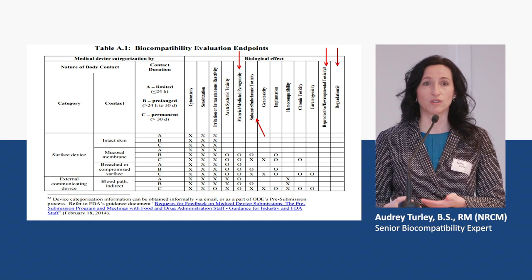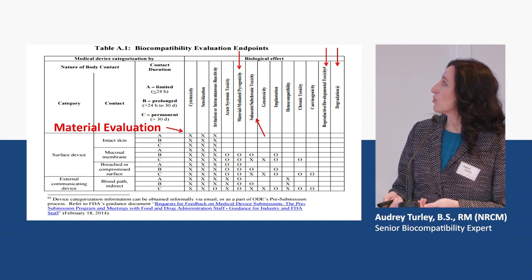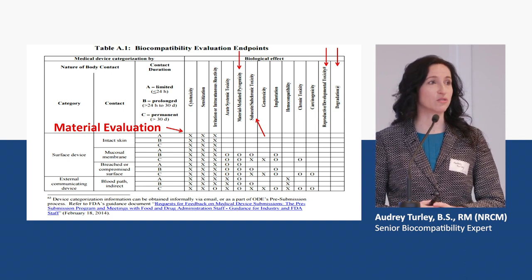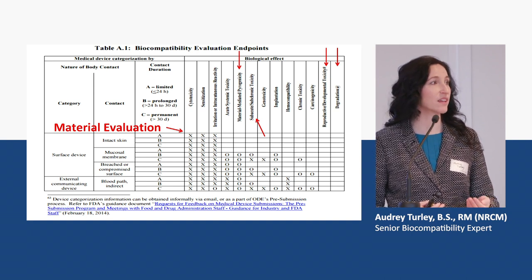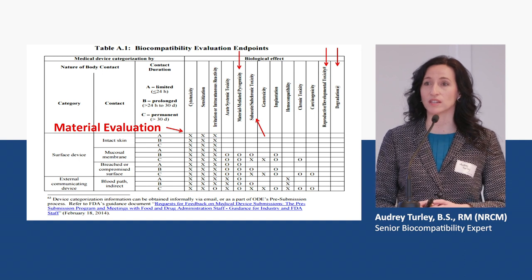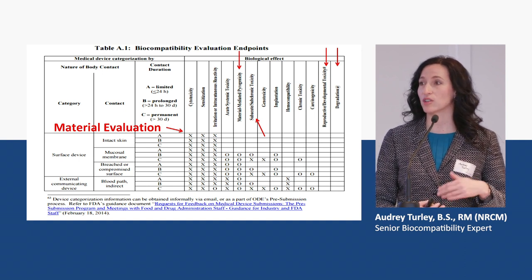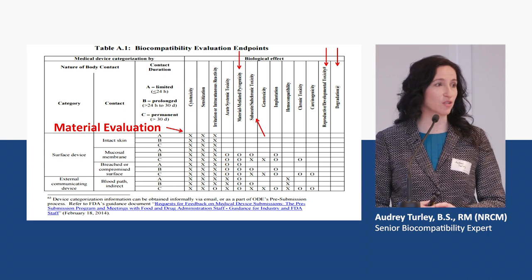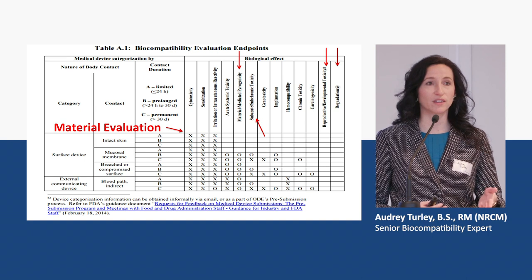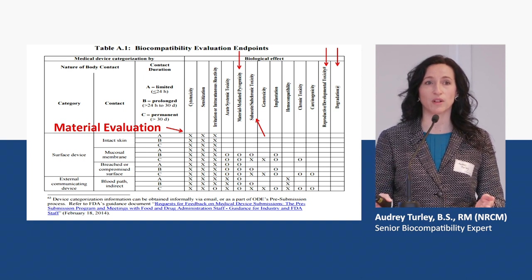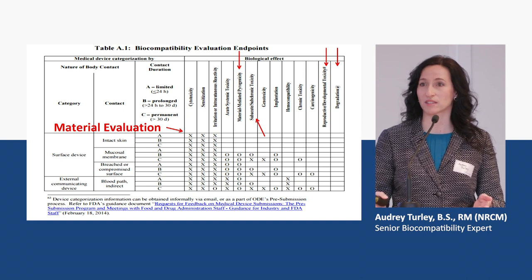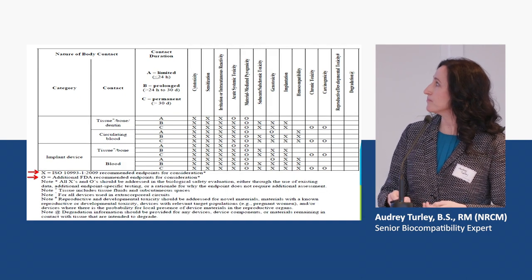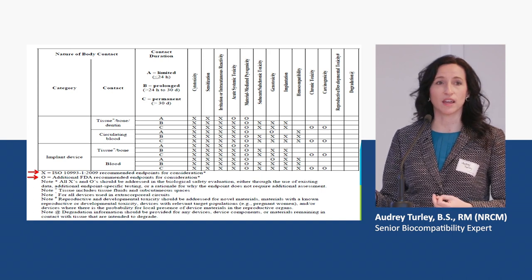One thing you'll notice is the FDA does not have a separate material evaluation column here, but in the document they do specifically say you need to consider your materials and processing. As a company, we encourage really well-documented change control so that you know when materials and processes are changed and have a step to assess whether that change will impact your biocompatibility — especially if you've changed suppliers or base materials since your original testing.